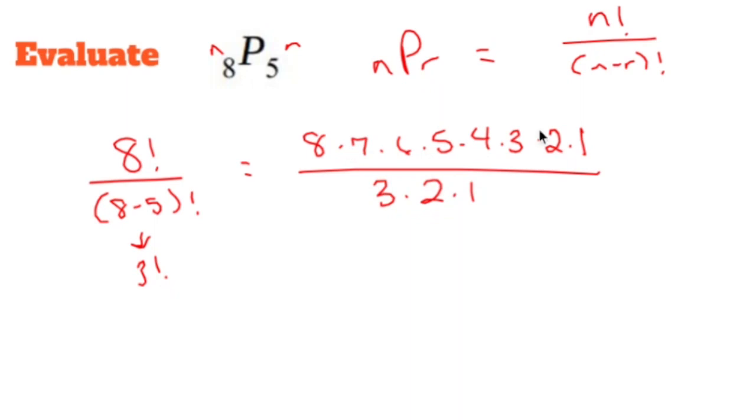Now I know that when I'm multiplying straight across the numerator and straight across the denominator, that anything that's the same up here that's also the same down there, I can just cross out. So this happens, which means I end up with eight times seven times six times five times four, just like I did up here two minutes ago.